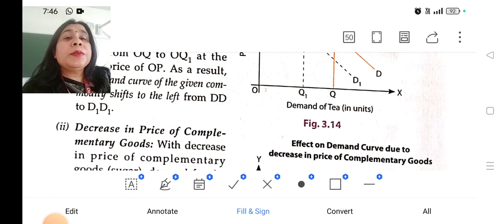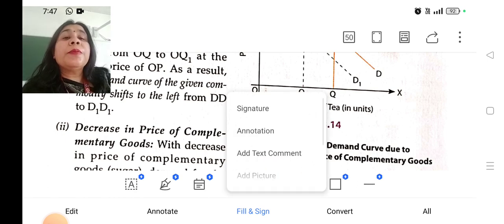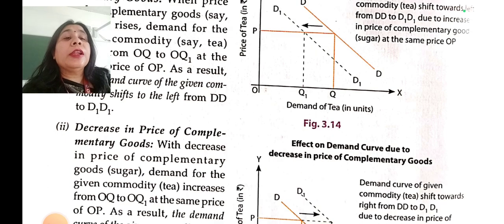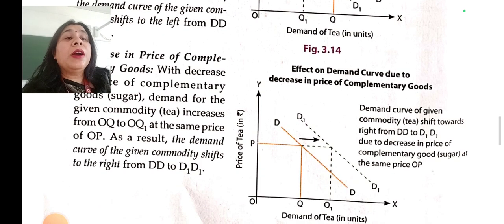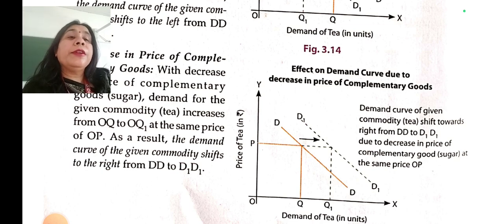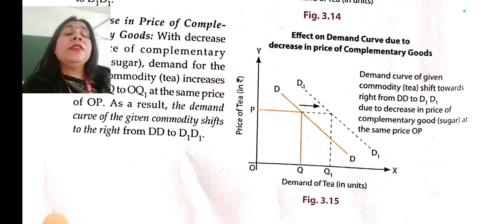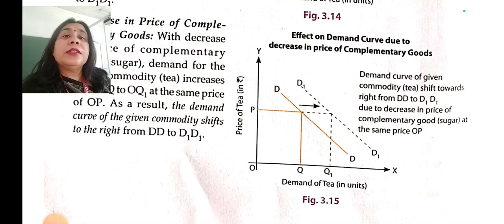You can practice these figures at home and you will be very easily able to understand. If the price of a complementary good declines, demand for the given commodity will increase. When the price declines, demand rises, and the same happens with complementary goods.